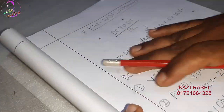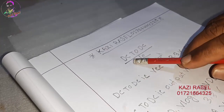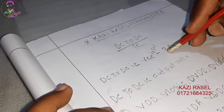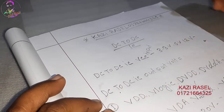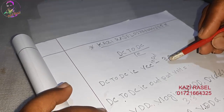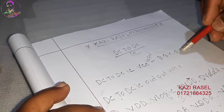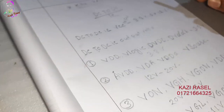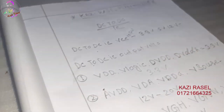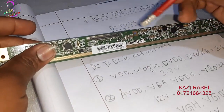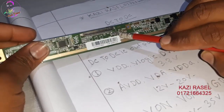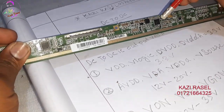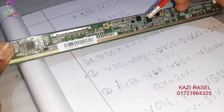This is what we need to do. DC to DCIC is the supply voltage. VCC is 3.3V. The supply voltage is 3.3V. DC to DCIC input voltage is 3.3V and the supply voltage is 3.4V.